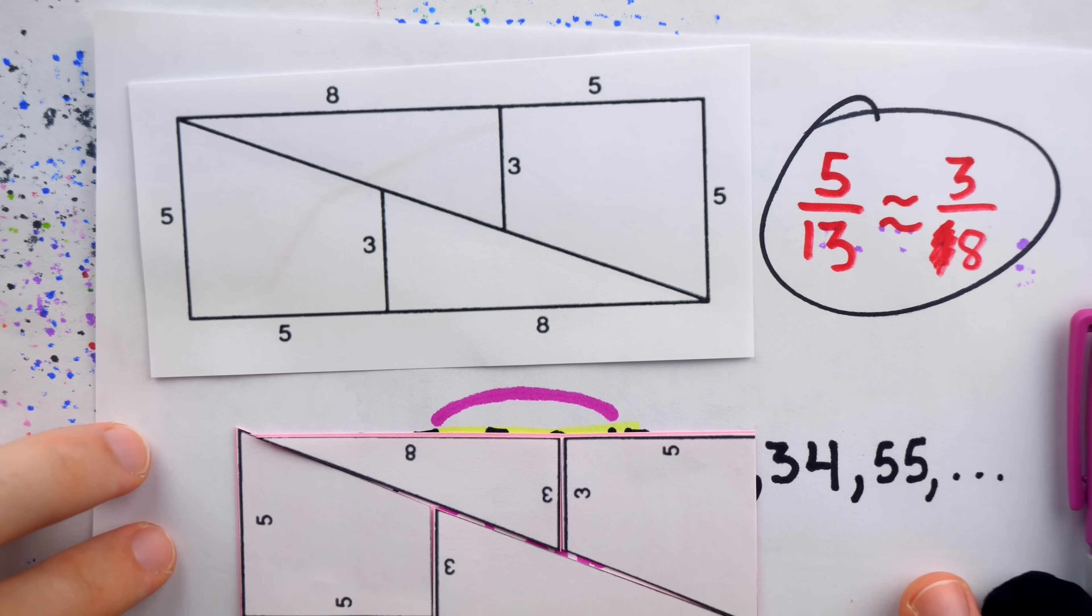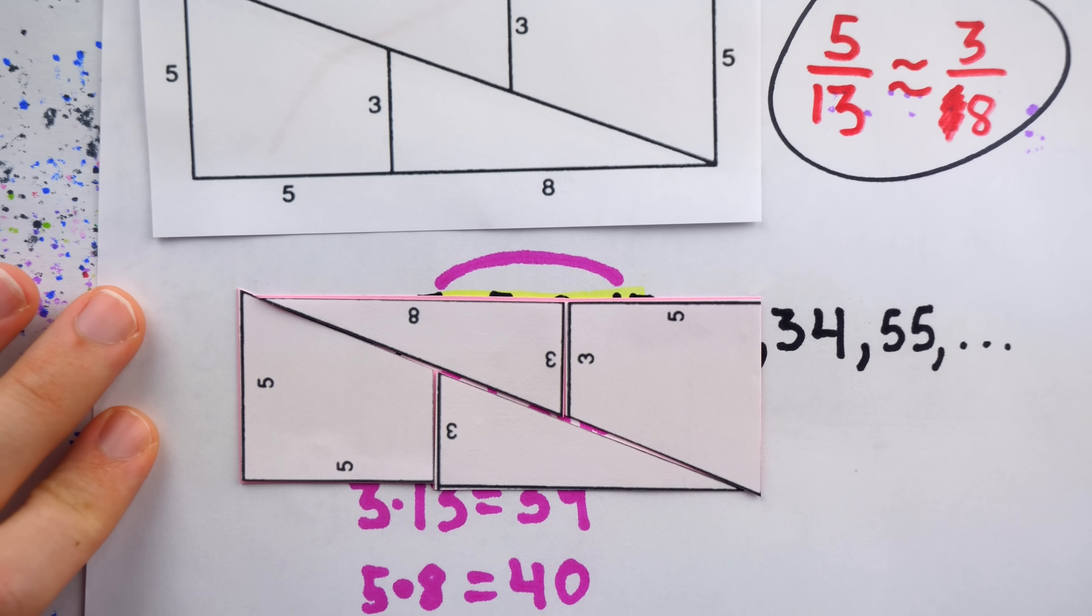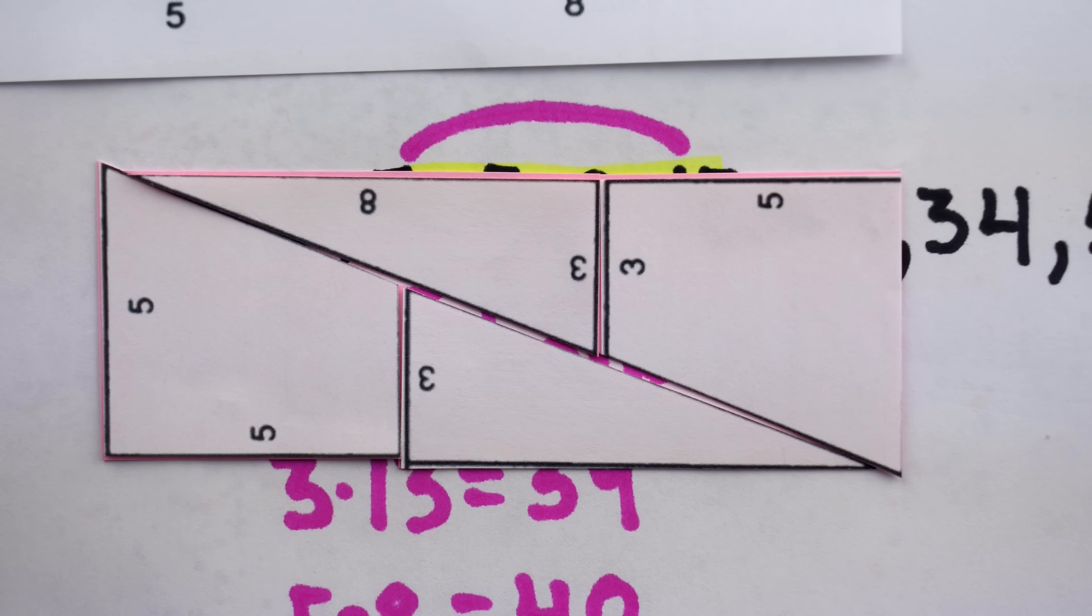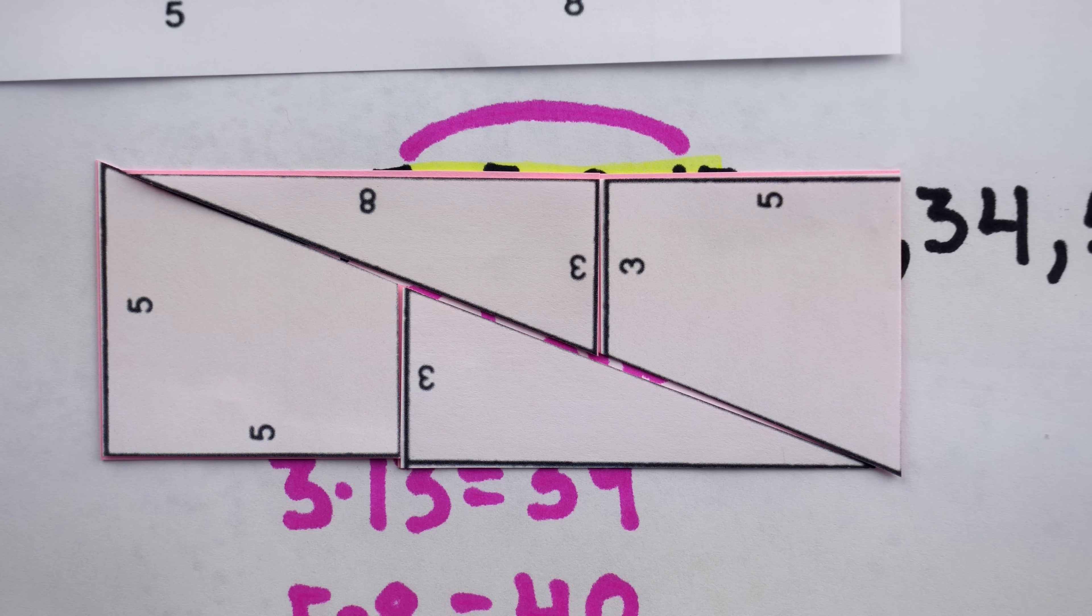It's no surprise, then, that the fact the rectangle isn't perfect is so hard to see, even when we print out the pieces and cut them ourselves.